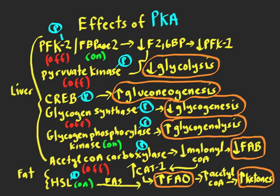Also in the liver, PKA can go into the nucleus and phosphorylate CREB, and when that happens there's an induction of gluconeogenic enzymes — that's how gluconeogenesis is turned on. To turn off glycogen synthesis, PKA phosphorylates glycogen synthase and turns it off. Then PKA phosphorylates glycogen phosphorylase kinase, which gets turned on, and that phosphorylates glycogen phosphorylase, which turns on glycogen breakdown. So PKA actually affects a kinase rather than glycogen phosphorylase directly.